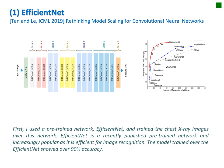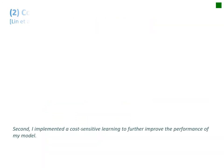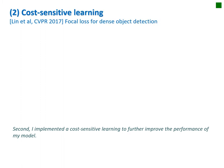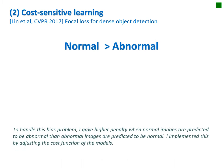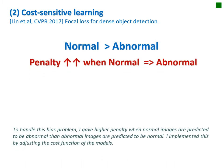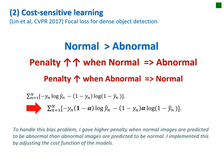The model trained over EfficientNet showed over 90% accuracy. Second, I implemented cost-sensitive learning to further improve the performance of my model. Note that typically there are much more normal images than abnormal images, so the model could be easily biased toward normal if trained without caution. To handle this bias problem, I give higher penalty when normal images are predicted to be abnormal than when abnormal images are predicted to be normal. I implemented this by adjusting the cost function of the models.